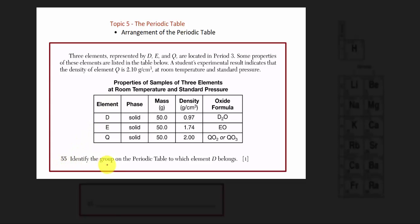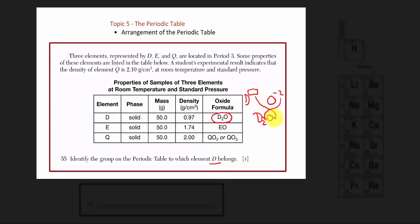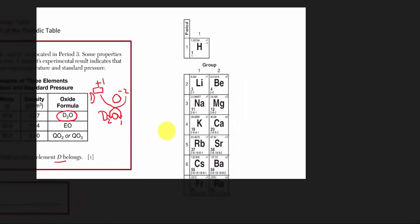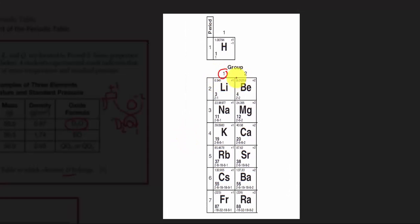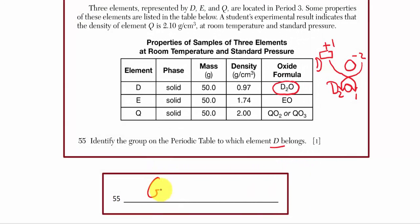Question 55: Identify the group on the periodic table to which element D belongs. The easiest way is to understand the element's valence electrons. From the oxide formula, element D's formula is D2O. Using crisscross oxidation states — oxygen is minus 2 — element D has an oxidation state of plus one. All elements in group one have plus one oxidation states, so element D must be a member of group one.